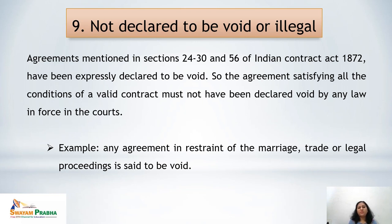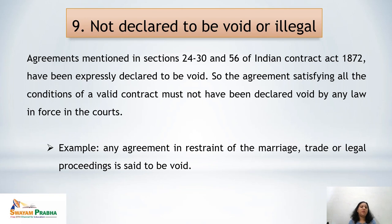The next essential is that the contract must not be declared void or illegal. Agreements mentioned in Sections 24 to 30 and Section 56 of the Indian Contract Act 1872 have been expressly declared to be void. The agreement, satisfying all other conditions of a valid contract, must not have been declared void by any law in force. For example, any agreement in restraint of marriage, restraint of trade, or restraint of legal proceedings is said to be void.